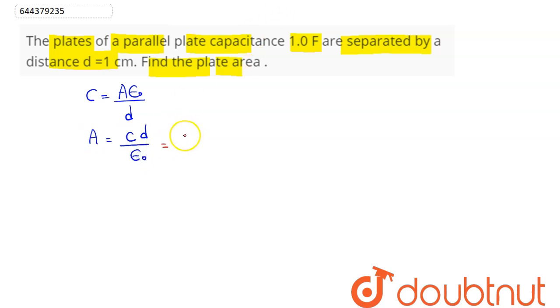So capacitance here is given as one farad, distance between the plates is one centimeter, that is 10 power minus two meter, divided by epsilon not here is 8.85 into 10 power minus 12.